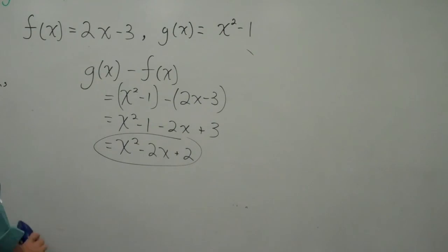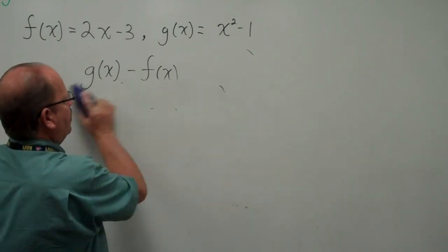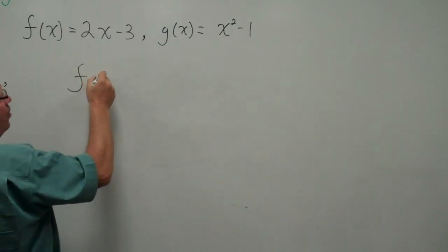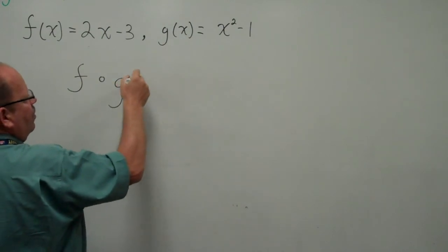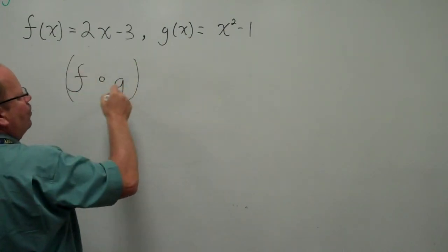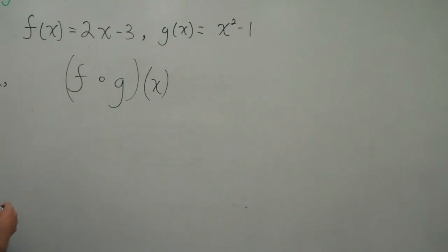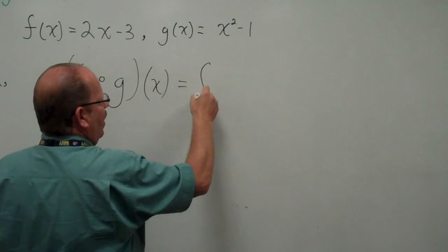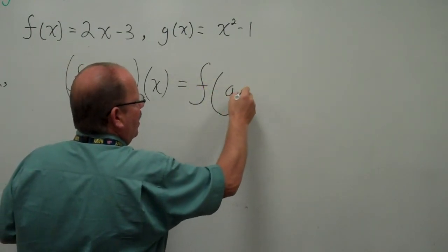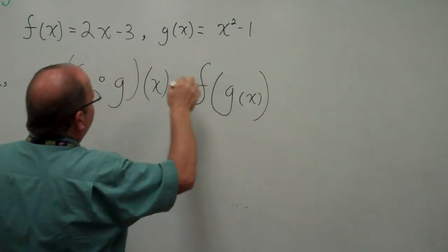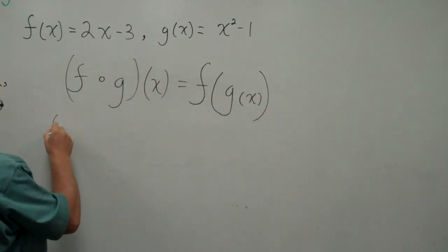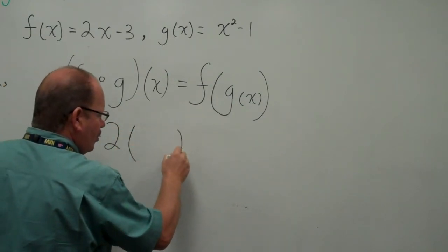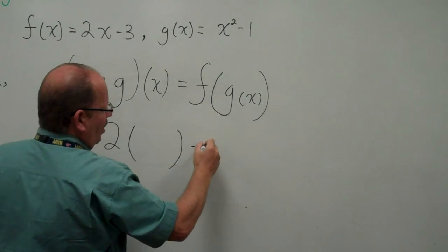And finally, we have what we call a function composed of a function, f composed of g(x). And this is simply f(g(x)). So we look at f. Let's rewrite. f(x) = 2(x) - 3.